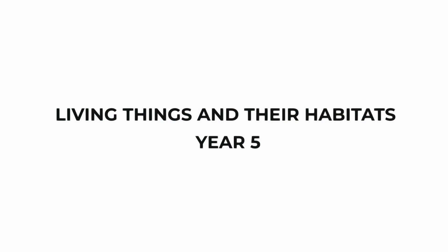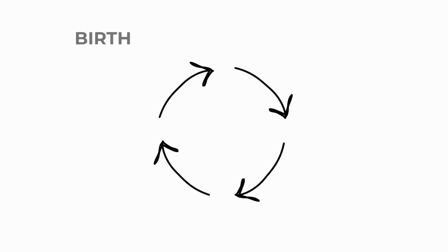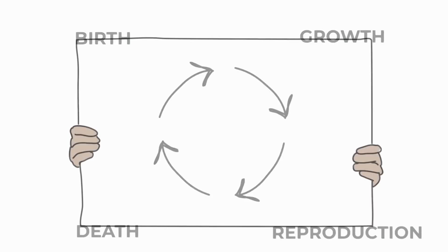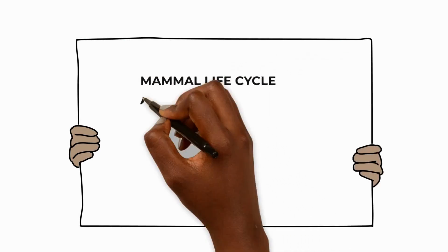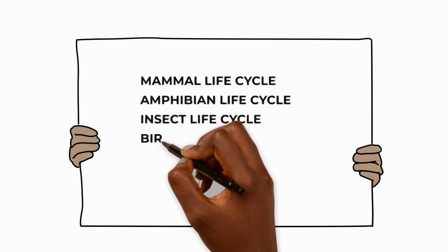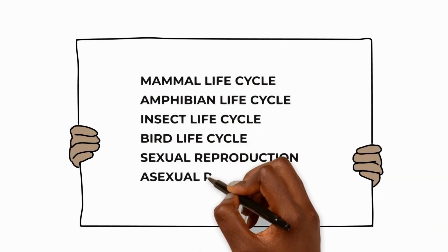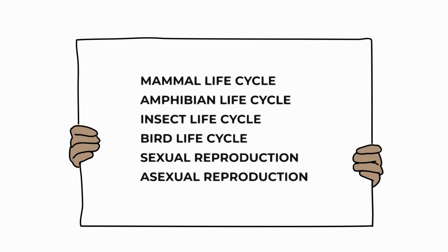Did you know that all living things go through certain stages in their lifetime, like birth, growth, reproduction and death? In this unit, we'll cover the life cycle of mammals, amphibians, insects and birds. We'll then look at sexual and asexual reproduction.